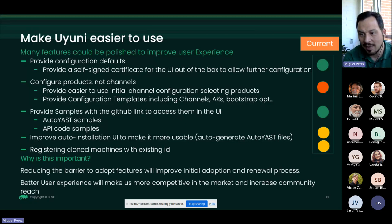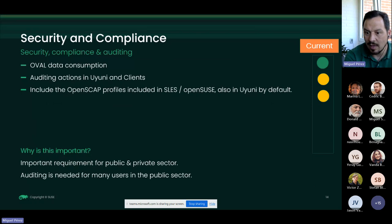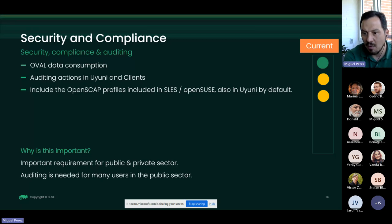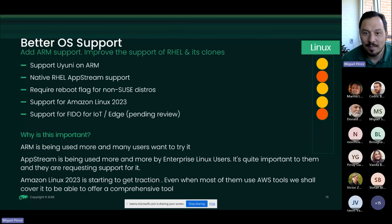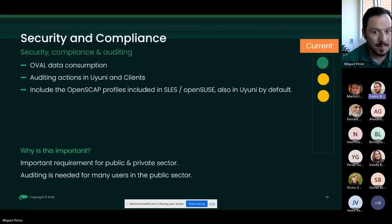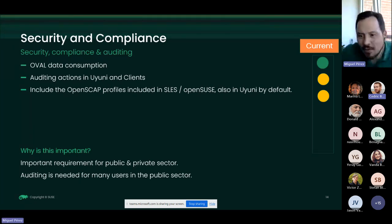Let's get those AutoYaST samples into Uyuni by default so that whenever someone wants to deploy automatically with openSUSE Leap or SUSE Linux Enterprise, they can do it. Reducing the barrier to adopt features is important. On security and compliance: we plan to get more information from OVAL directly instead of packages for better CVE access, and improve OpenSCAP support — which is used by sysadmins to check compliance before the security team comes chasing them.